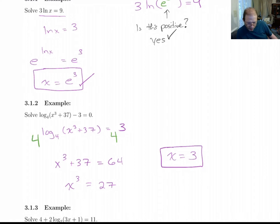Now let's check this in the original. And remember, all we really need to do is look at what's inside the log. So we need to say, is 3 cubed plus 37 positive? The answer there is yes. So that's all we need to do as far as checking the answer. x equals 3, we're good.